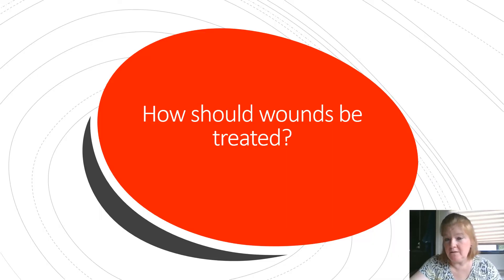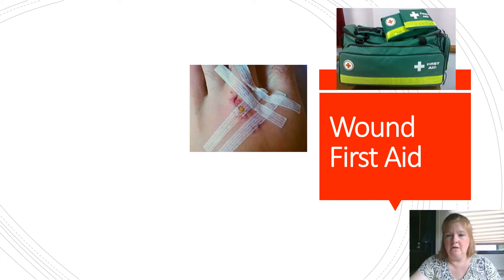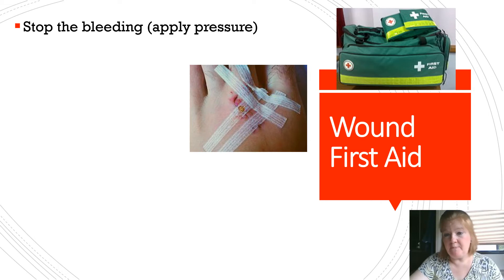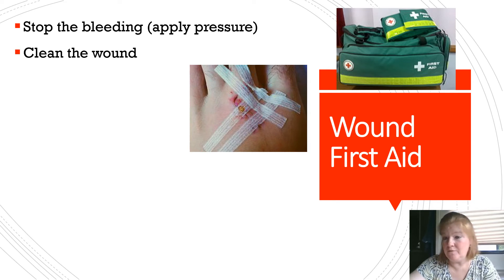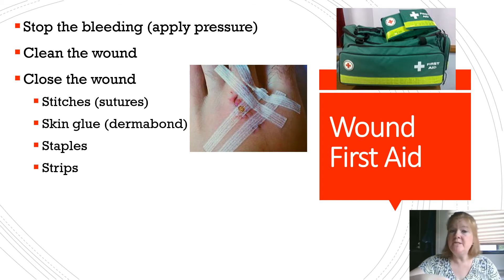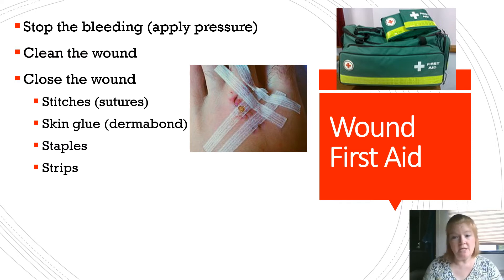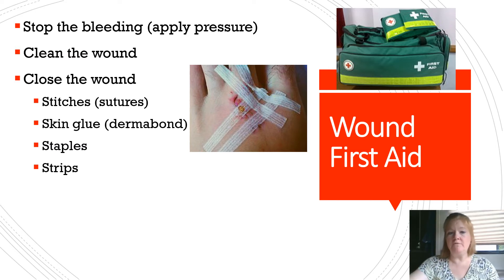How should wounds be treated? We'll cover the basics. First, you want to stop the bleeding — usually by applying pressure. In more severe cases, that means applying a tourniquet above the wound to cut off blood flow below it. You want to clean the wound, especially with abrasions and puncture wounds. You'll want to close the wound — sometimes with stitches or sutures, skin glue called dermabond, staples, or strips. All of these hold the wound edges together so the skin can heal properly.